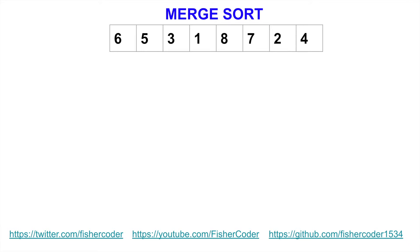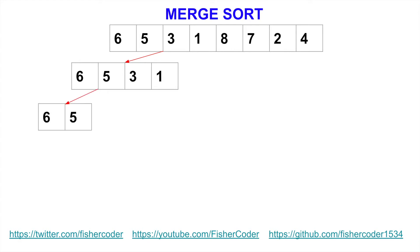First we divide the first half, so we got 6, 5, 3, 1. Then we continue to divide because these are not individualized items yet — we cannot compare. We continue to divide 6 and 5. We always chop them into half and take care of the very first half. Now 6 and 5 — at this level, these two items are individualized so that we can compare 6 and 5.